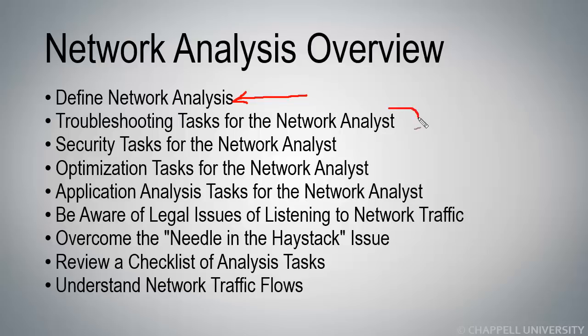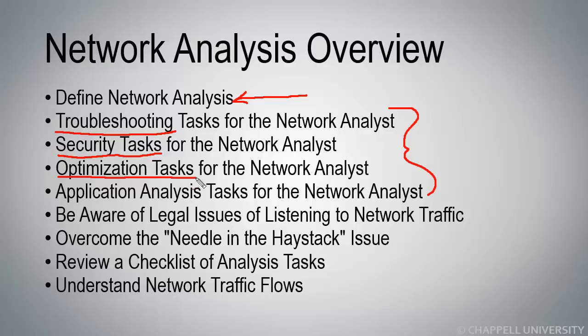We have four sections that follow, where I'm going to go into some of the key tasks for network analysis. I'll be opening up some trace files to show you various troubleshooting tasks in Wireshark. I'll be looking at some security tasks and we will open up a trace file and find some very unusual traffic. Then we'll look at some optimization tasks in Wireshark, taking a look at all the different servers responding to TCP handshakes, and we'll find the servers that are not configured in an optimal manner.